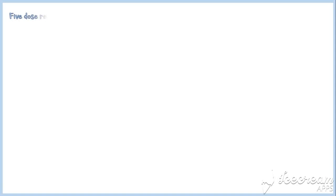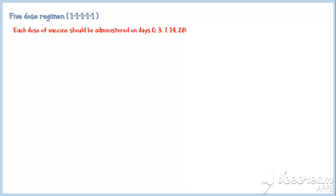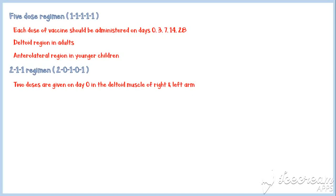In the five-dose regimen, each dose of vaccine is administered on days 0, 3, 7, 14, and 28 into the deltoid region of adults and anterolateral thigh region in younger children. In the 2-1-1 regimen, two doses are given on day 0 in the deltoid muscle of both right and left arms, and an additional one dose each is given on day 7 and day 21.